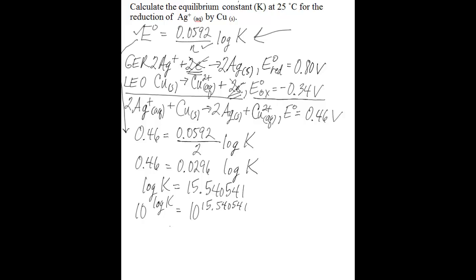And then K is equal to 3.5 times 10 to the 15th — a very large equilibrium constant, which is typical for redox reactions. So we've solved the problem here. We've calculated the equilibrium constant from a known standard cell potential and a known number of moles of electrons transferred, given the relationship here. And this is the equation that can be used at 25 degrees Celsius.